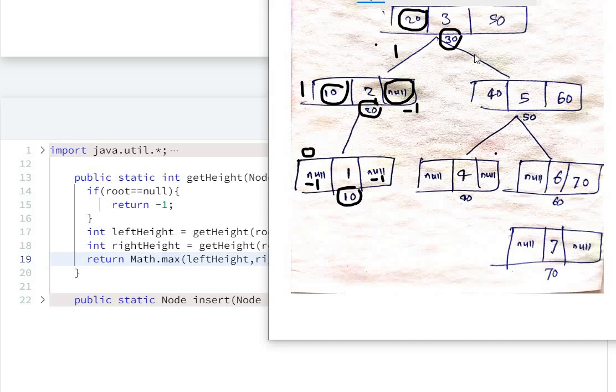So here at 3's left, the left tree's height is one. Next, now we will go right, so from 3 we'll go to 50.